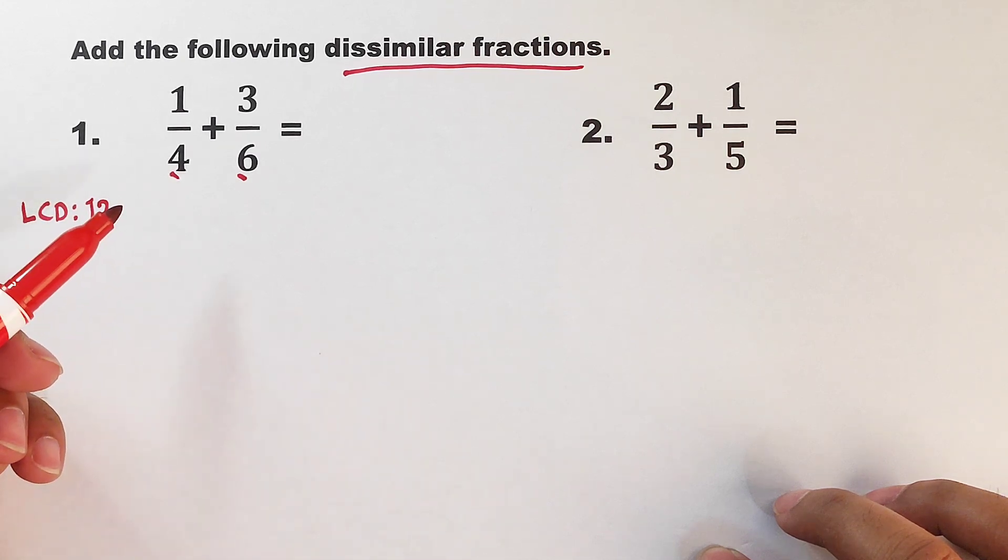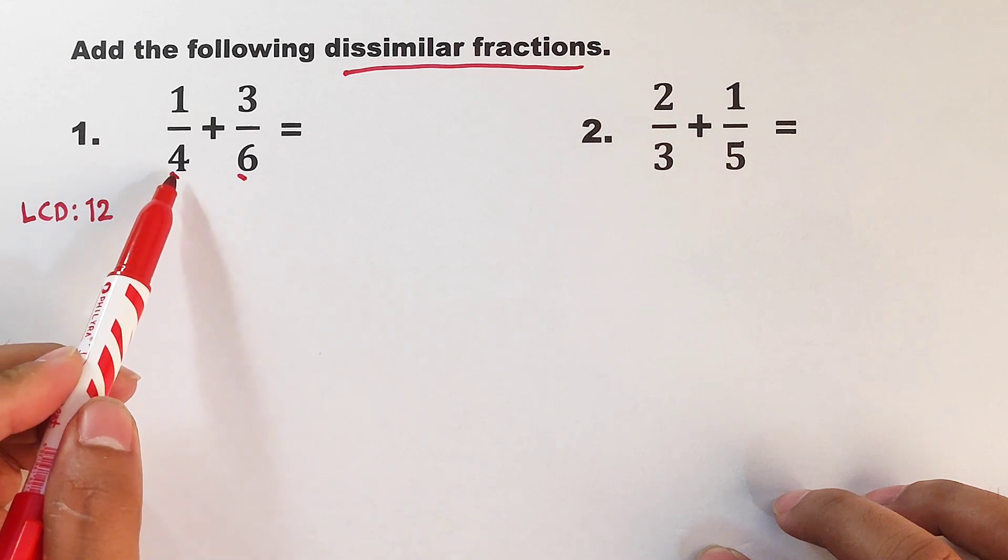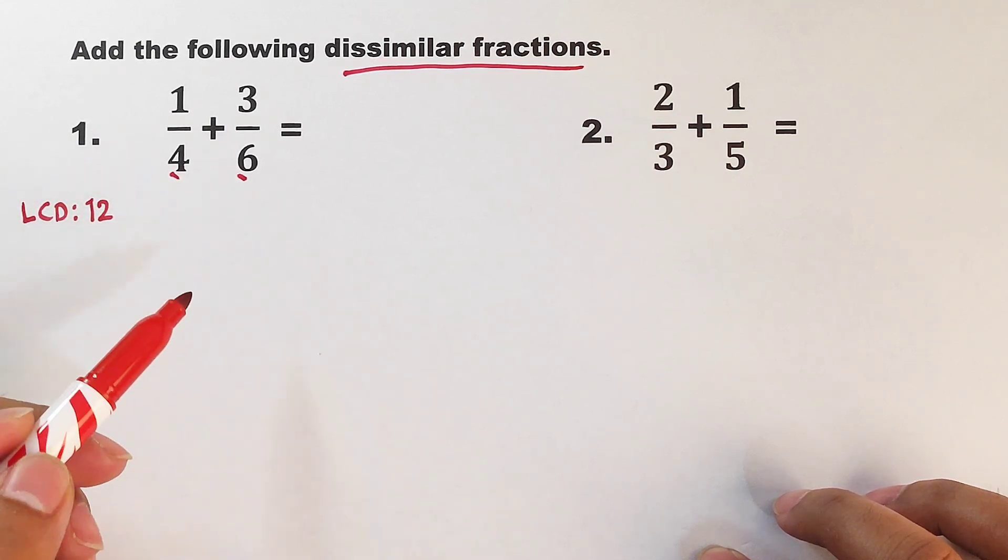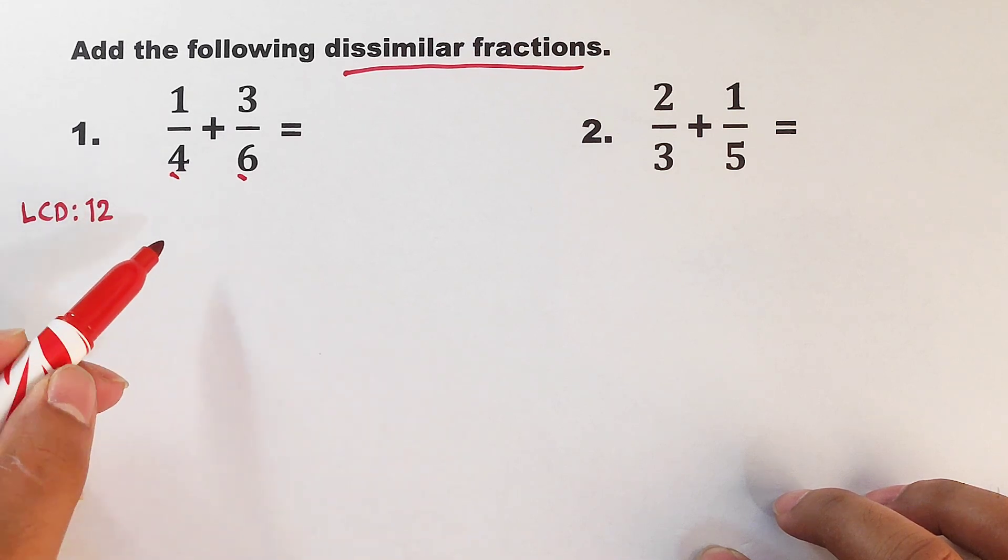So what we're going to do is to think of the numbers that we can multiply so that this 4 will become 12. Very good. We need to multiply 4 by 3. So in that case,